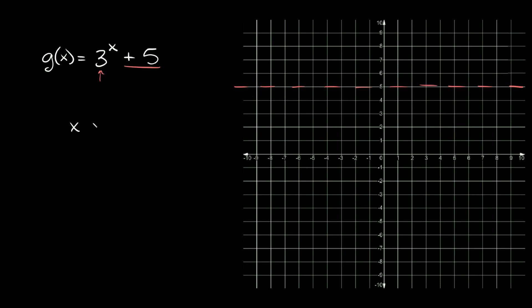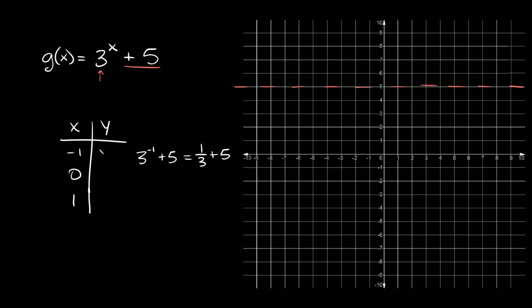In order to graph this, we can just make a little table and graph a few points. Some easy numbers to generally use are negative one, zero, and one. So if we plug in negative one, we're going to have y is equal to three raised to the negative one plus five. That's equal to three raised to the negative one, which is the same thing as positive one third, and we have plus five. So five plus a third is equal to five and one third. Now let's plug in zero: three raised to the zero plus five. Any number raised to the zero power is equal to one, so this is equal to one plus five, which is six.